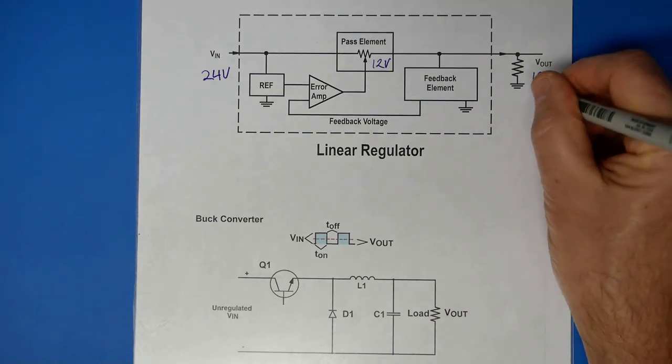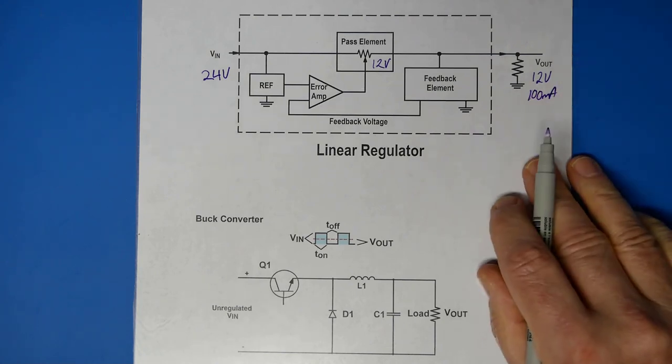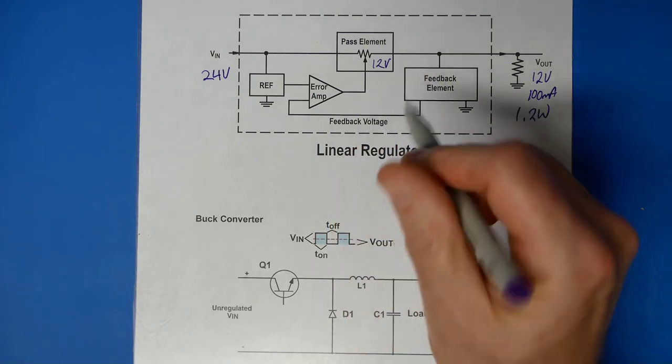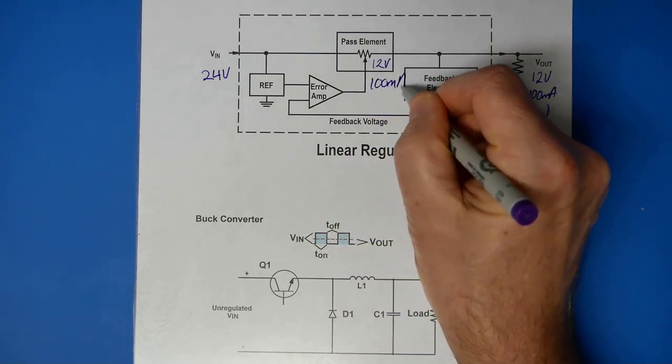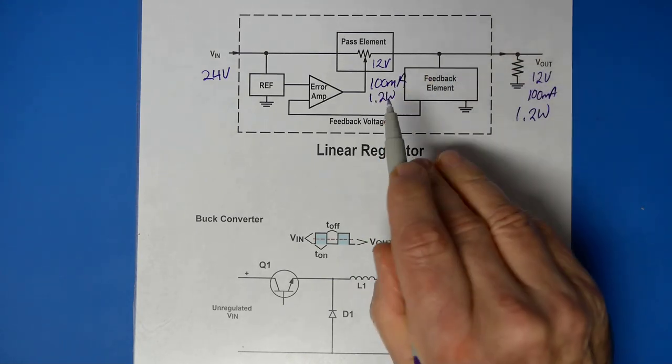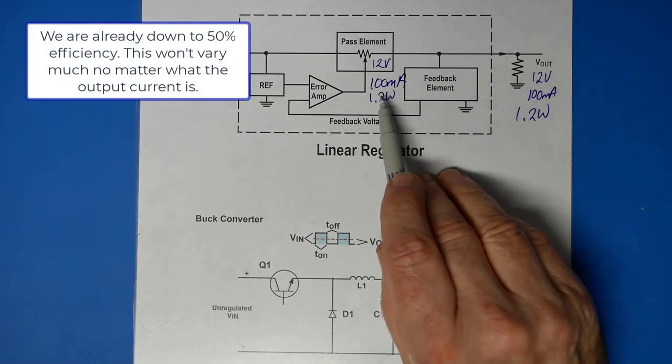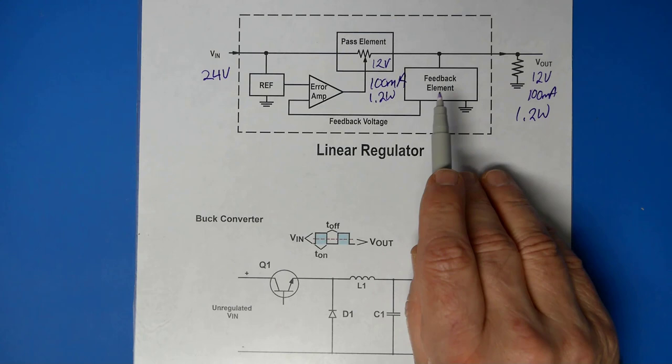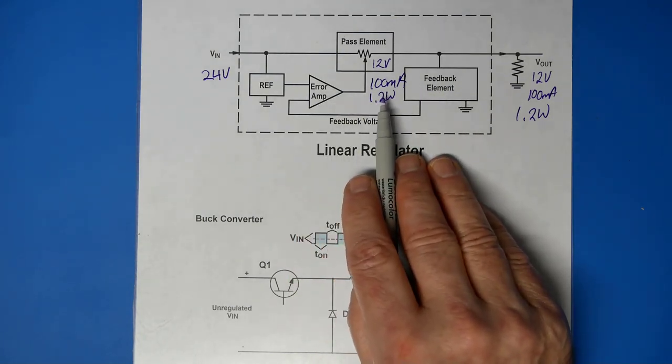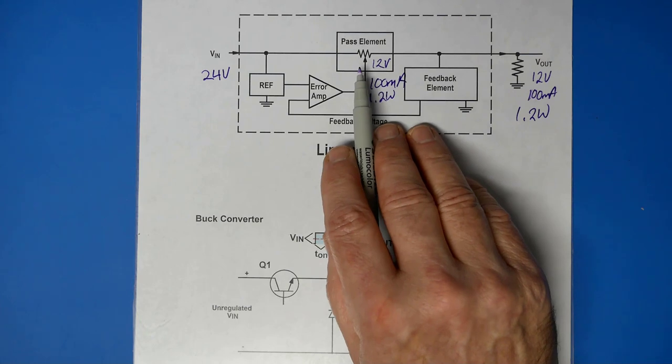And the error amp will adjust this pass element which is essentially a transistor. This transistor is going to have to carry all of the output current plus some of the current that's actually being fed through the system. So if I have 100 milliamps at the output, I have 1.2 watts. That 100 milliamps has to go through the pass element also, which means that there's also 1.2 watts that's dropped here and it is just wasted energy. So right now we're looking at optimally a 50% efficiency.